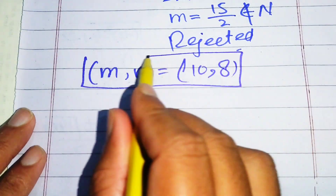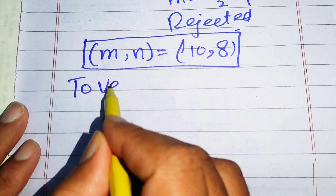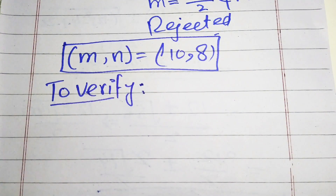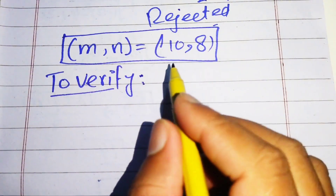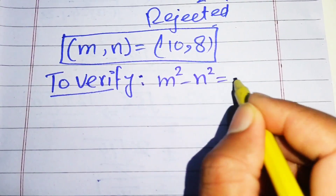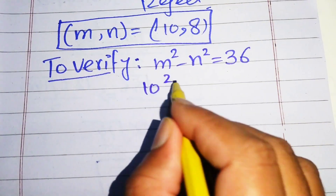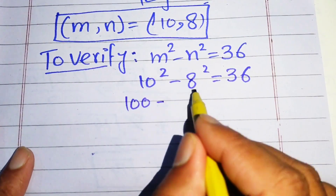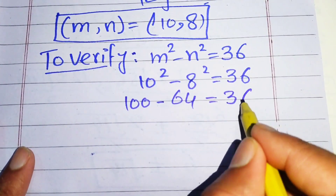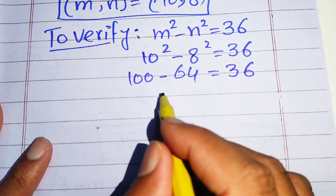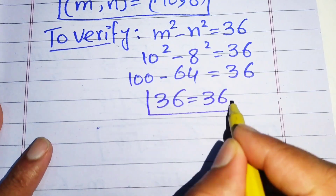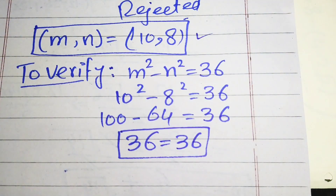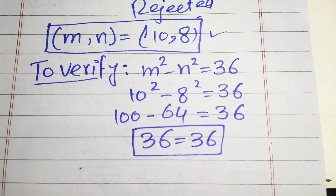We verify this solution in the original equation m squared minus n squared = 36: substituting m = 10 and n = 8 gives 10² minus 8² = 100 minus 64 = 36, which equals 36. This confirms that m = 10, n = 8 satisfies our equation. This is the final answer. Thank you for watching — please subscribe to my channel for more videos.